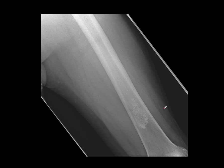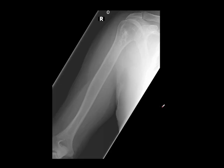Of course, in theory, any enchondroma could be a chondrosarcoma — it's impossible to tell on imaging alone, especially if it's a painful site. But generally speaking, these are usually just benign. They do have to be correlated with the patient's symptoms, and any periosteal reaction or cortical breach would be interpreted completely differently.